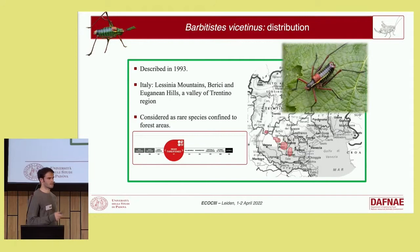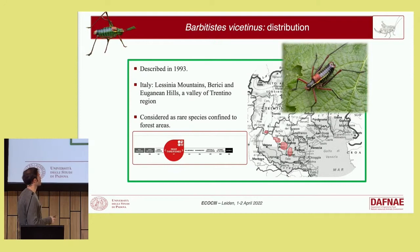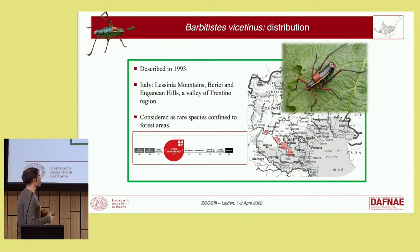Barbitistus vicetinus is an ensiferan species described early in 1993 as an endemic of the north-east of Italy. In particular, it can be found in the Lessinia mountains, in the Berici hills, and it was found in a valley of the Trentino region. It was considered as a rare species confined to forest areas, and because of its small distributional range, it is also considered as a near-threatened species in the IUCN Red List.